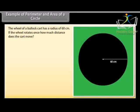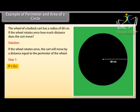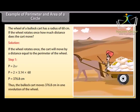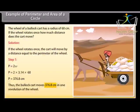Example 3: The wheel of a bullock cart has a radius of 60 centimeters. If the wheel rotates once, how much distance does the cart move? Solution: If the wheel rotates once, the cart moves a distance equal to the perimeter of the wheel. Using P equals 2 pi r and substituting the values, P equals 376.8 centimeters. Thus the bullock cart moves 376.8 centimeters in one revolution.